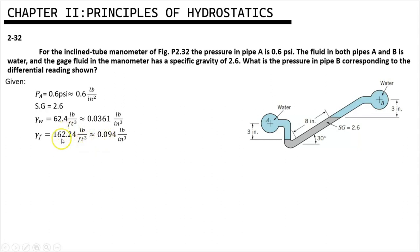We must divide this by 12 cubed to get the value of 0.094 pounds per cubic inch.